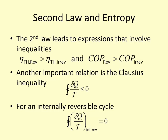Another important inequality derived by Clausius is the cyclical integral of δQ/T ≤ 0. For a cycle that's internally reversible, the cyclical integral of δQ/T equals zero. If it's not internally reversible — meaning it's an irreversible cycle — then δQ/T is less than zero. It's only for an internally reversible cycle that the equality holds true.